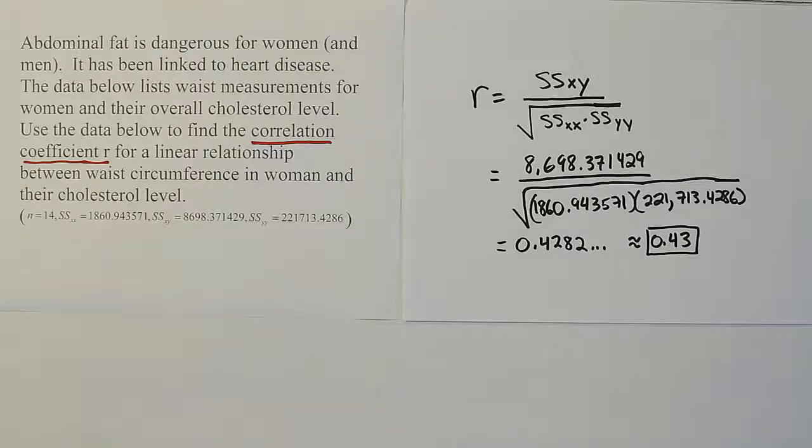So this value here, this 0.43, it isn't too strong. It's not super weak, but it's not very strong. If you remember, I think we were unable to show that there was a linear relationship with the data we had when we did the hypothesis test on the slope. So that may be reflected here, the fact that the R is relatively weak.